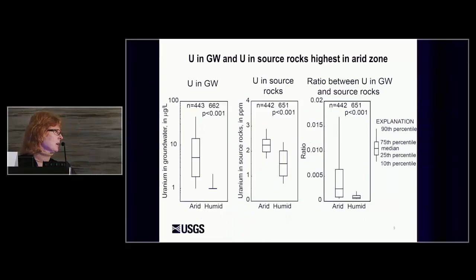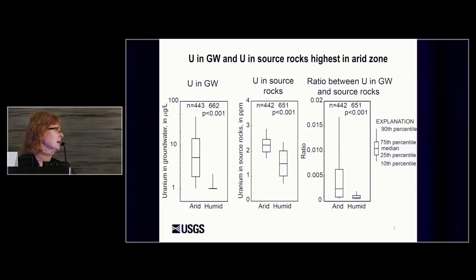In box plot form, uranium concentrations in groundwater are significantly higher in the arid climate than in the humid climate. Uranium in the superficial rocks and sediments are also significantly higher in the arid climate. But when I took the ratio between those two variables, there's still a higher ratio in the arid setting than the humid — which means there's something besides just source rocks causing the increased concentration in the arid environment.